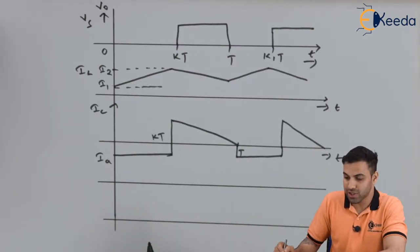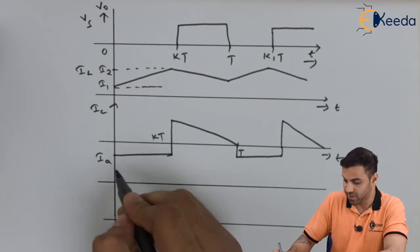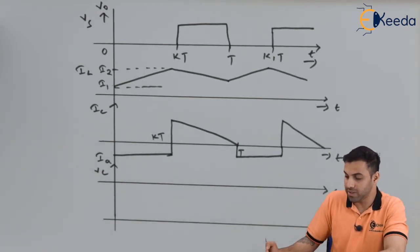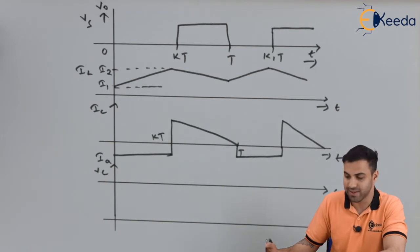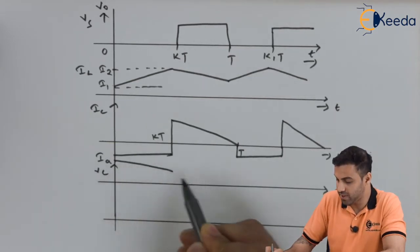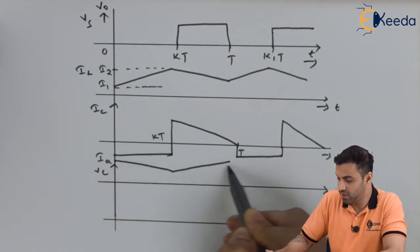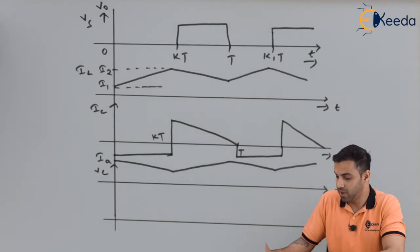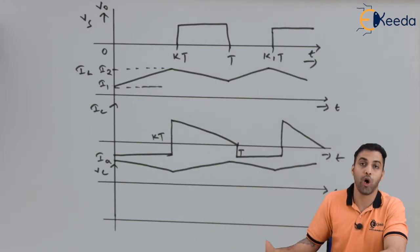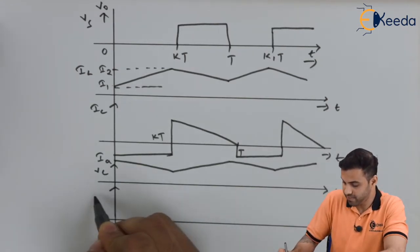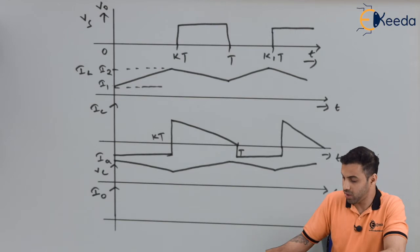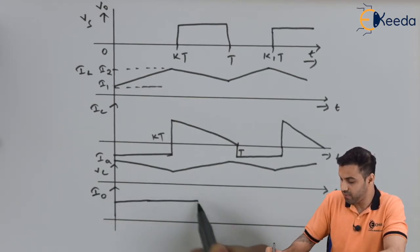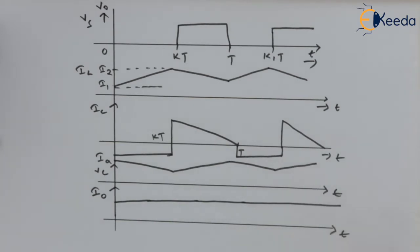Now let's draw the voltage across the capacitor Vc versus time. The capacitor voltage alternates between discharging and charging each cycle. The output current I0 versus time gives a constant value of I0.